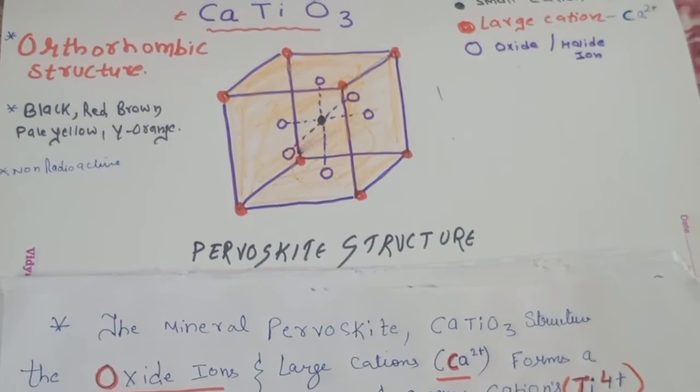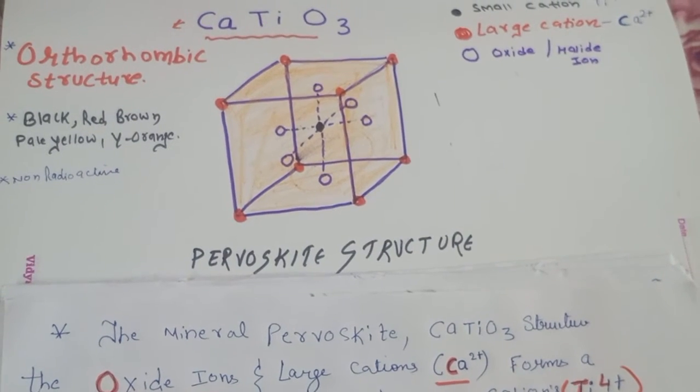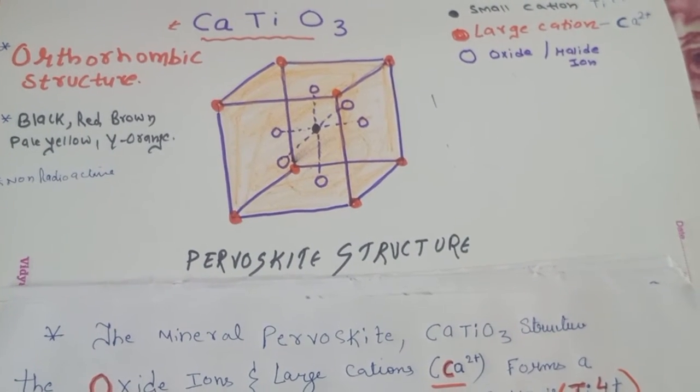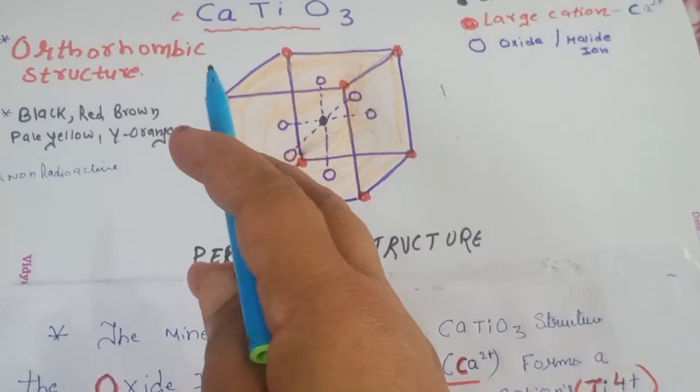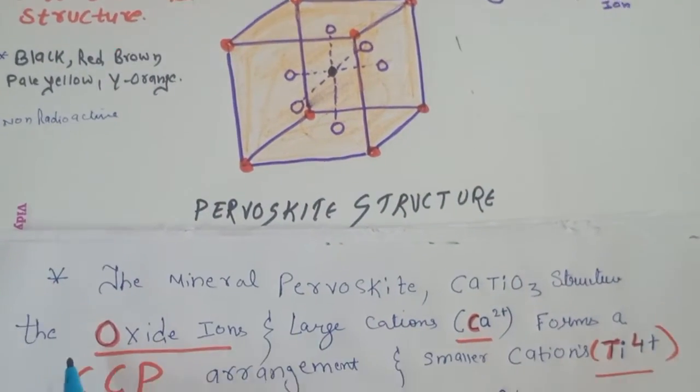Which type of questions are asked in the NET exam? If they will ask you the perovskite structure is of which type, you have to mark the orthorhombic structure. What is the crystal arrangement? It is our CCP type.